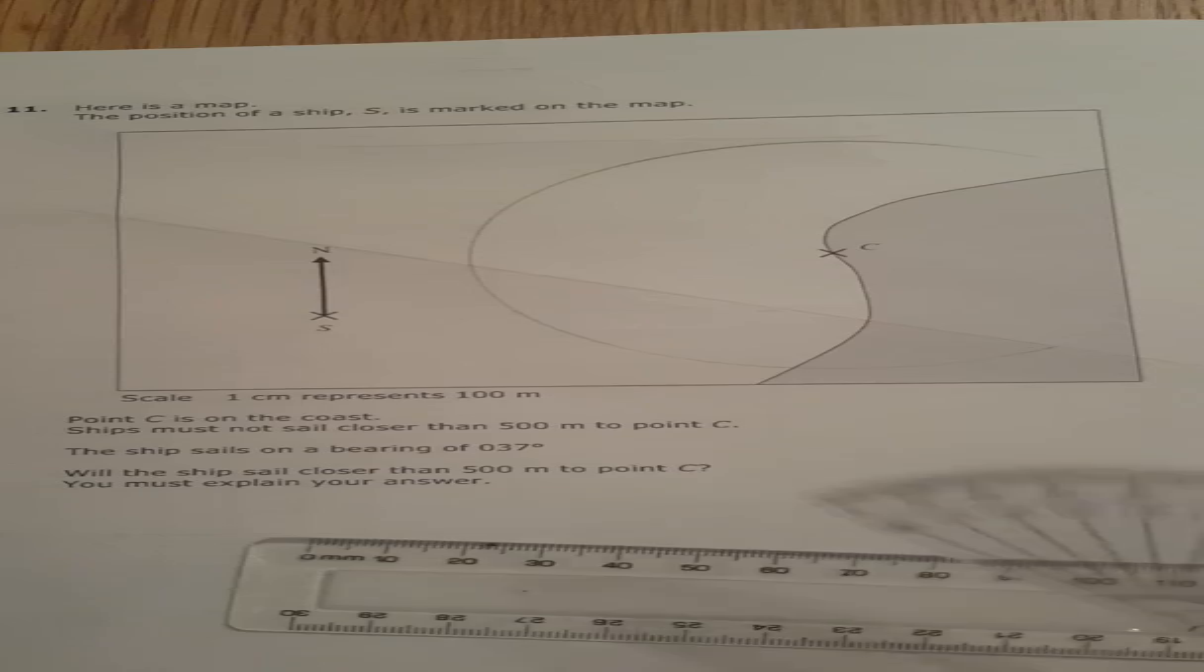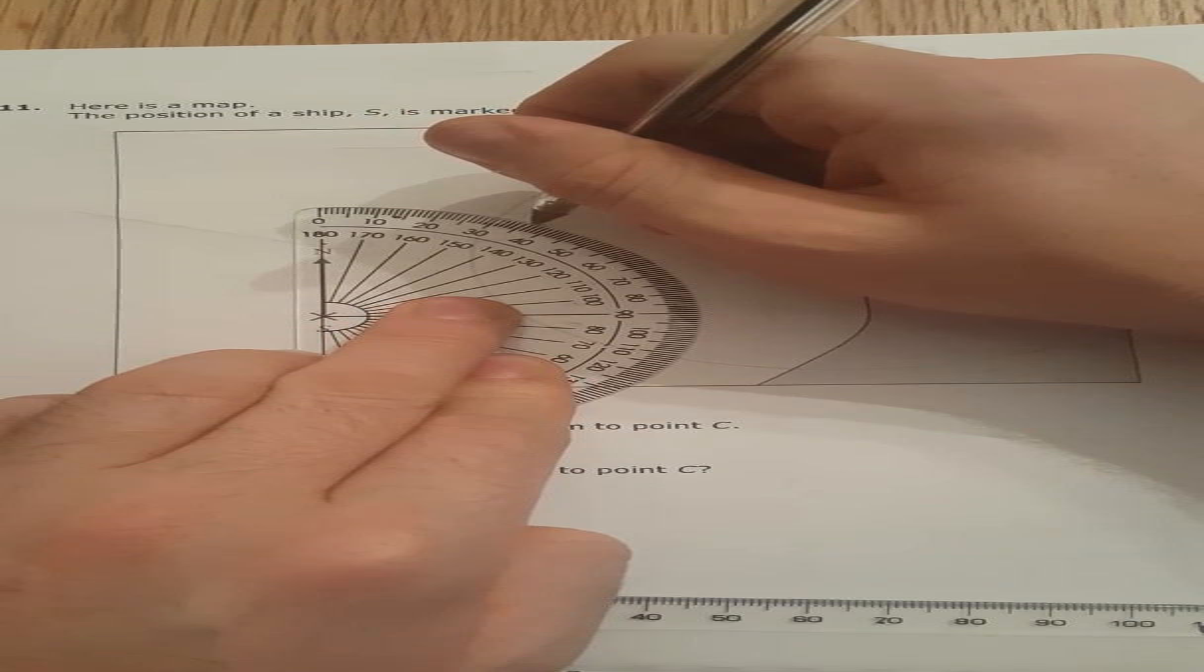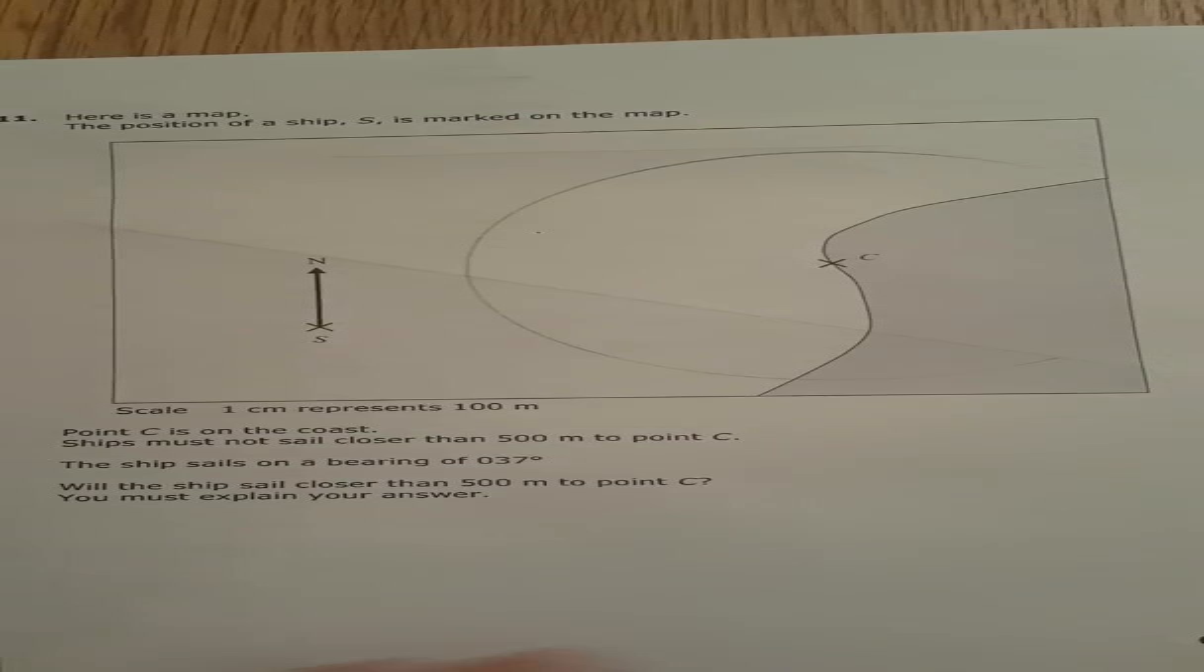We need to see if that's going to happen. Now bearings are three figures from the north going clockwise. So 037 is here, look, 35 is there, and you can tell it's going to go through.